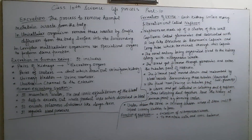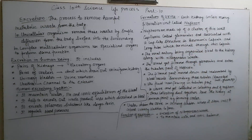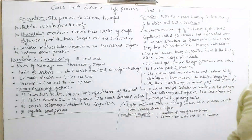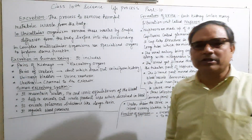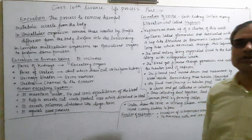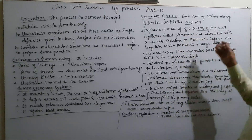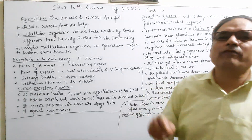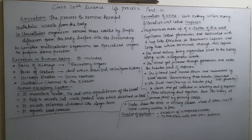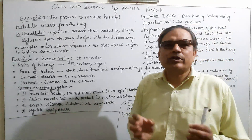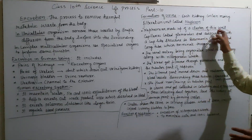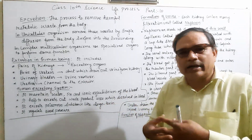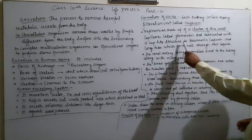The kidney is the filtration organ. It filters waste substances from the blood and contains many small filtration units called nephrons. The nephron is the filtration unit of the excretory system. It is made up of a cluster of thin-walled capillaries, which is known as the glomerulus.